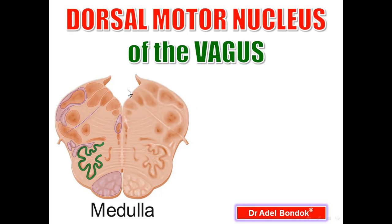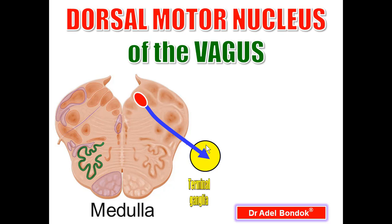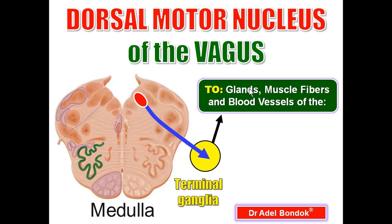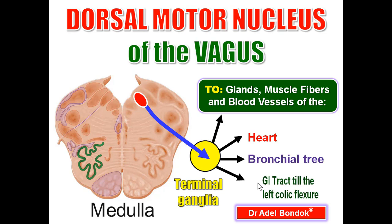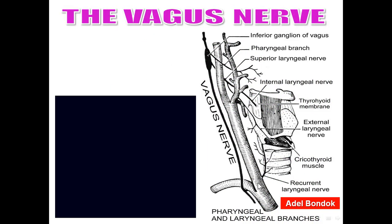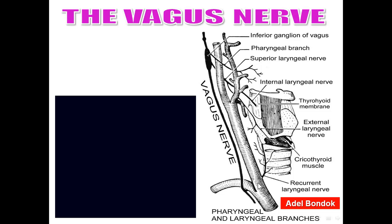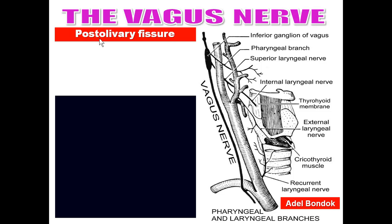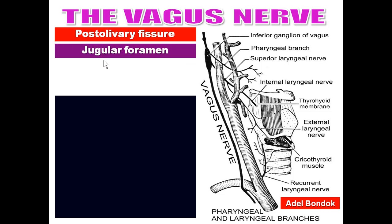The dorsal motor nucleus of the vagus gives fibers that synapse in terminal ganglia. From the terminal ganglia, postganglionic fibers are distributed to glands, muscle fibers, and blood vessels of the heart, bronchial tree, and GI tract up to the left colic flexure. The vagus exits the brain from the post-olivary fissure and exits the skull through the jugular foramen.